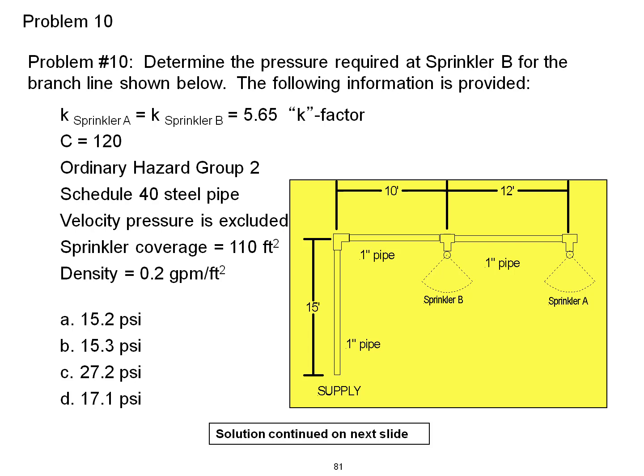K is equal to 5.65. The C factor is 120. We have an ordinary hazard group 2 hazard. Schedule 40 steel pipe. Velocity pressure is excluded. The sprinkler coverage is equal to 110 square feet and the design density is 0.2 gallons per minute per square foot.